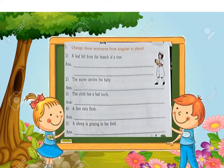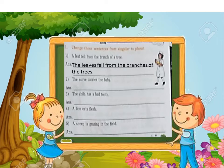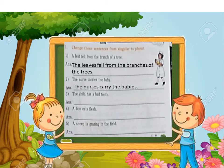Change the sentences from singular to plural. A leaf fell from the branches of a tree. Answer: The leaves fell from the branches of the tree. Sentence 2: The nurse carries a baby. Answer: The nurses carry the babies. Sentence 3: The child has a bad tooth. Answer: The children have bad teeth.